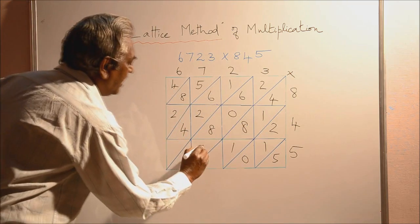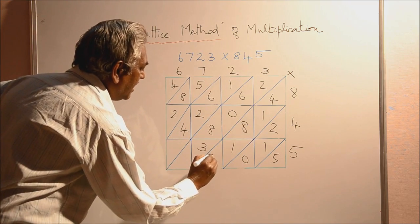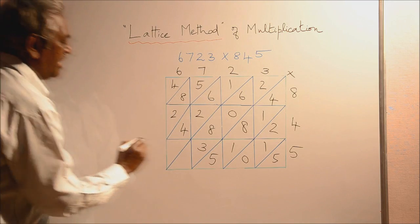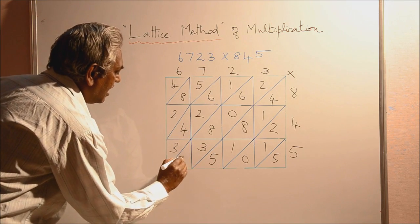5, 7's are 35. 3 here, 5 here. Then 5, 6's are 30. Write 3 here and 0 here.